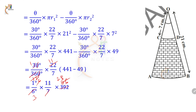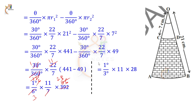So 1 by 3 into 11 into 28. Calculate: 1 into 11 is 11, and 11 into 28 gives 308. Then 308 by 3.